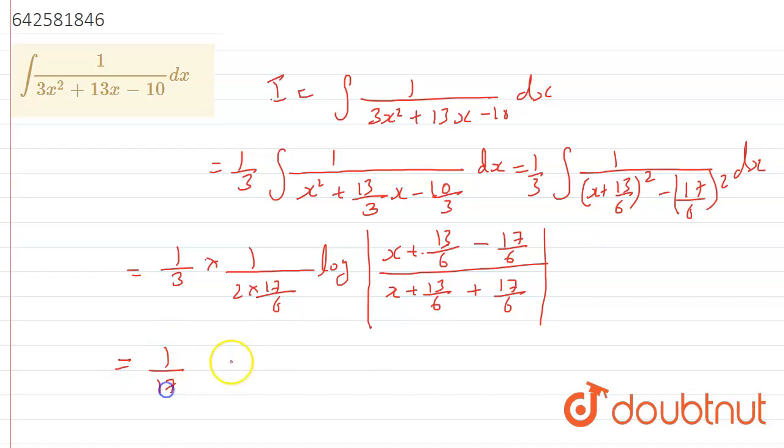(1/17) log |(6x - 4)/(6x + 30)|. Right, by solving this we are getting here, so at the end what we are getting is